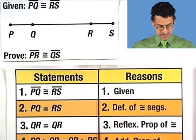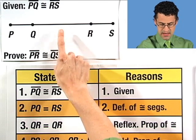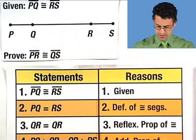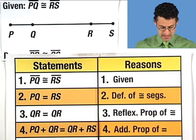Now what do we do? We take the length PQ, this is exactly what I foreshadowed, and add it to the length of QR. And that equals the length of QR plus the length of RS. And that's just the additive property of equality.